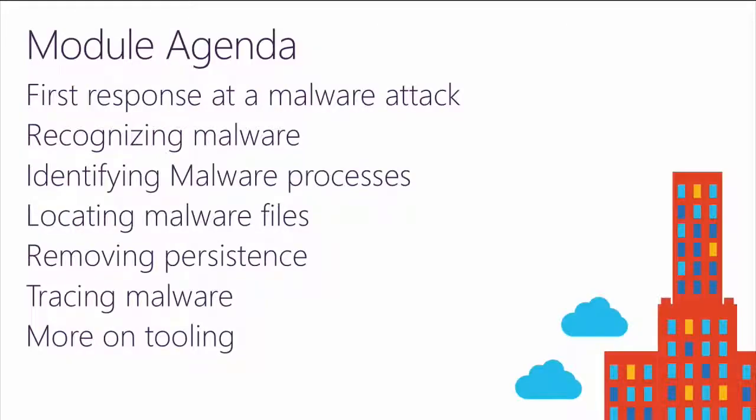Welcome to Module 6. In this module, we are going to cover with Raymond Malware Incident Response. The agenda is: first, the first response at a malware attack; how we can find out if it's a real malware or something else; how we can identify the malware processes; how we can locate a malware file and remove the persistence; or how we can trace malware; and what tools we can use for that.